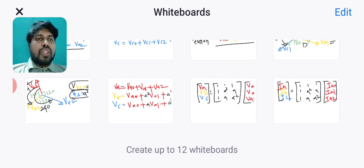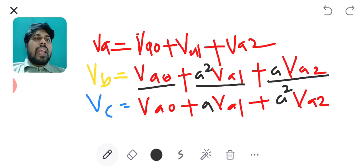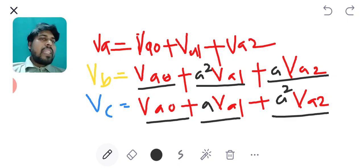So if we substitute all those expressions in the expression of Vb as well as Vc, I can find Vb equals Va0 plus A² Va1 plus A Va2 and Vc equals Va0 plus A Va1 plus A² Va2.